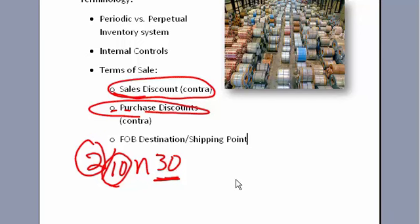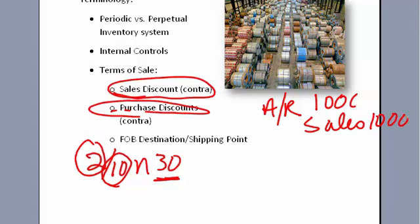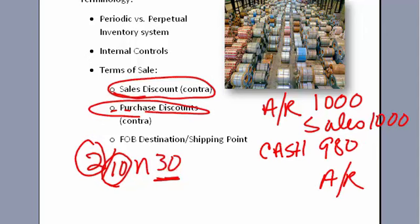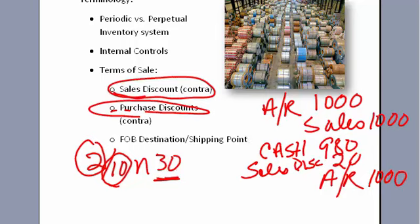If we record sales, we have accounts receivable of $1,000 and sales of $1,000. Then when somebody pays us, if we give them a 2% discount or $20, we receive cash of $980, accounts receivable comes off for $1,000, and we have a $20 sales discount. We record it this way — rather than just debiting sales — so we don't lose how much of a discount we're giving. The sales discount is a contra account.